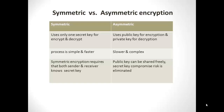Now let's compare symmetric encryption with asymmetric encryption. The first difference is that symmetric encryption uses only a single secret key for both encryption and decryption, while asymmetric encryption uses a combination of a public key and a private key. The second difference is that symmetric encryption is simpler and faster because its algorithm design is less complex, while asymmetric encryption is slower and more complex due to its highly sophisticated algorithm.